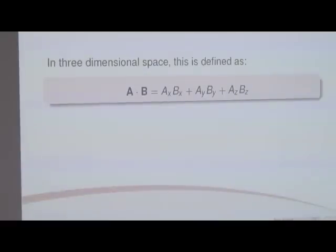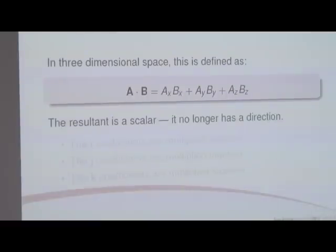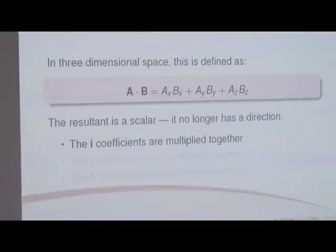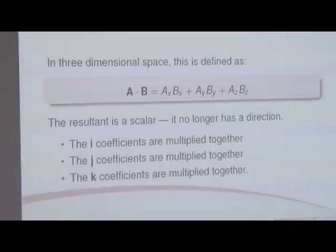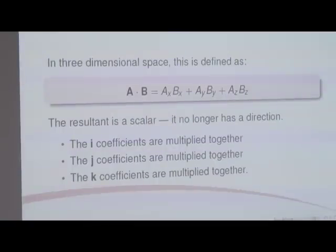You'll notice that the answer has no unit vectors — because the dot product is a scalar, it no longer has any direction. You take the i coefficients and multiply them, the j coefficients and multiply them, and the k coefficients and multiply them, then add them all together and you'll get a number which is A dot B.